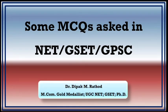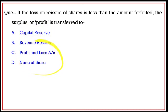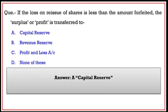Let's do some MCQs from previous UGC NET, GSET, and GPSC examinations. MCQ 1: If the loss on reissue of shares is less than the amount forfeited, the surplus or profit is transferred to — the answer is capital reserve. No need to check other options. The share forfeiture balance is transferred to capital reserve.